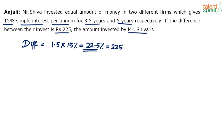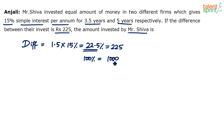How much is the amount invested by Mr. Shiva? If 22.5% equals 225, then 100% equals 1000. So the amount invested by Mr. Shiva is rupees 1000.